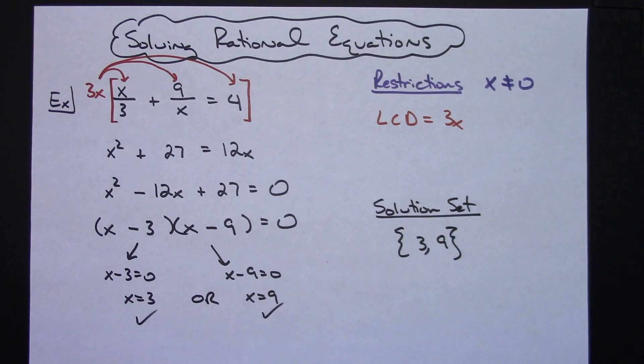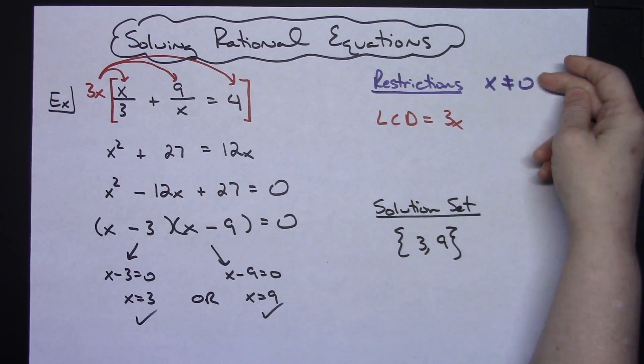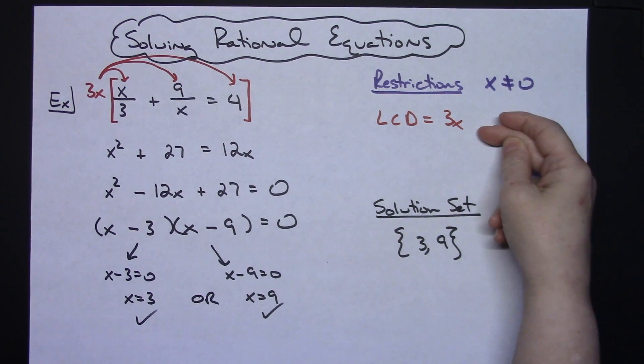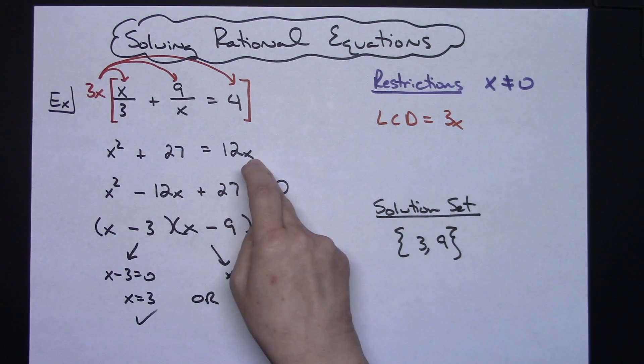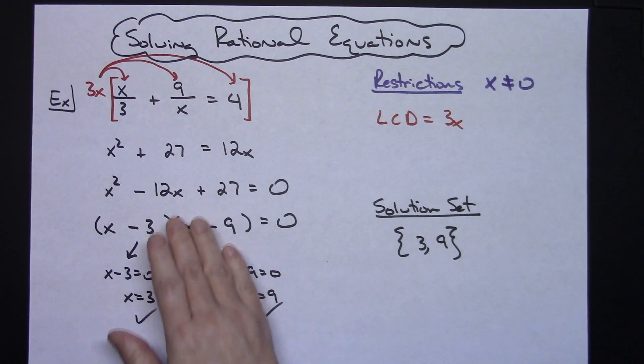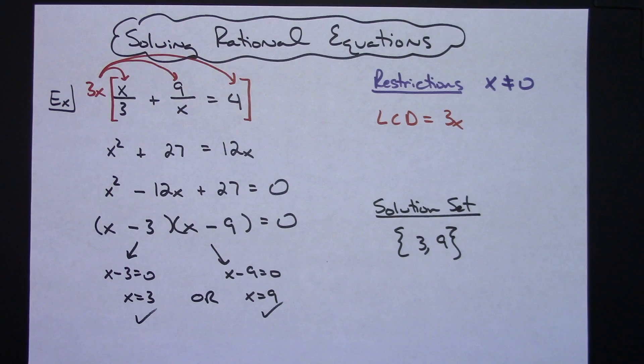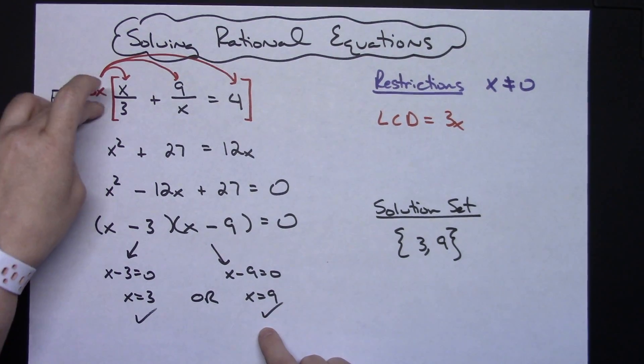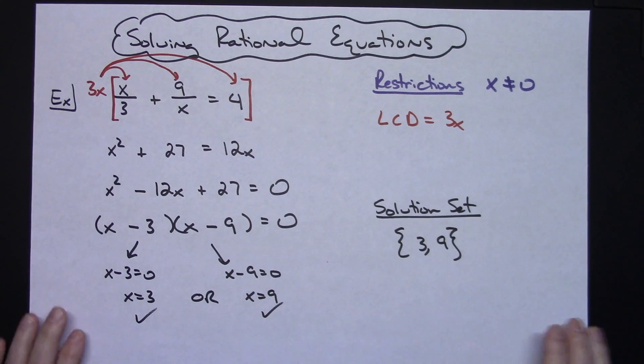So just one straightforward example of a rational equation, how you would go about solving it. You've got to check for those restrictions. If you use the least common denominator you can eliminate the fractions. And sometimes when that happens you will then get a quadratic which would need to maybe factor and solve, or quadratic formula. You could even complete the square. And then be sure and take both of those answers and plug them back in to check to make sure that they both work.